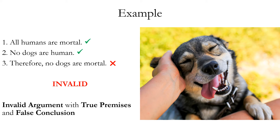What valid means is not that the premises or conclusion have to be true per se. Valid means you will never get a case with true premises and a false conclusion. Valid is like a promise: if the premises are true, it guarantees the conclusion will be true. So if you ever have a case where premises are true but the conclusion is false, it breaks that promise, making it an invalid argument.